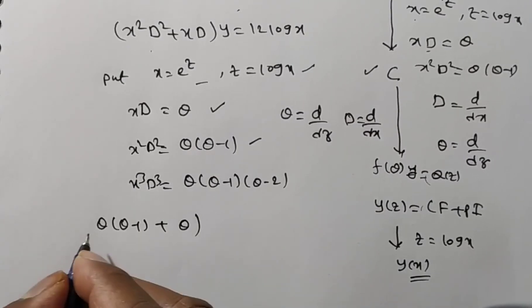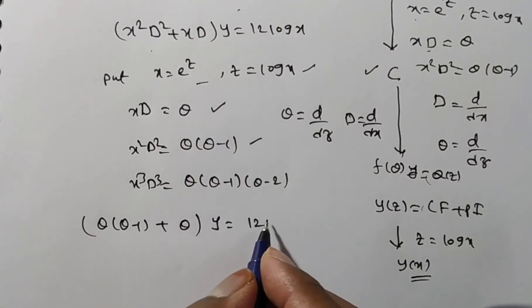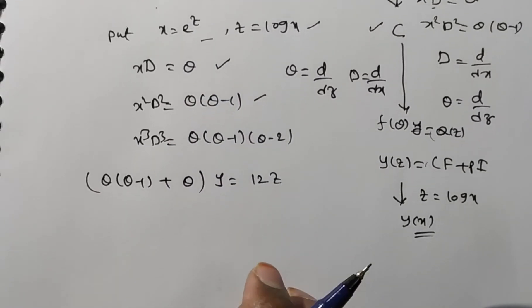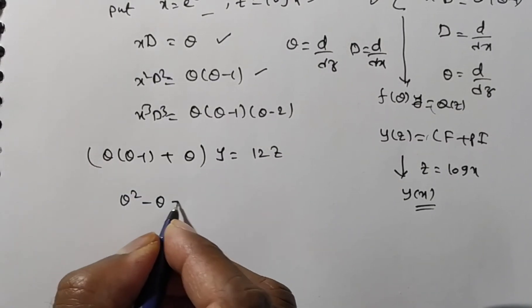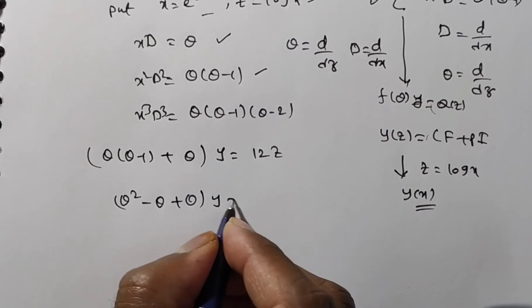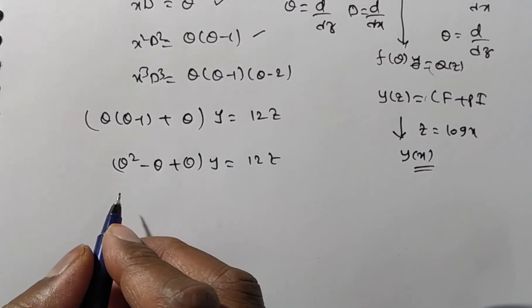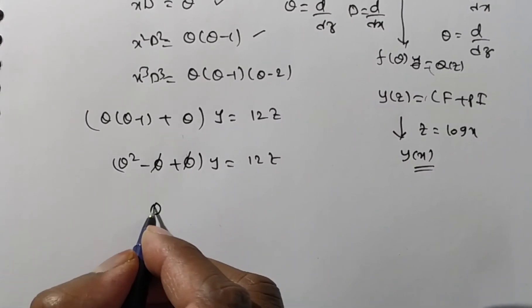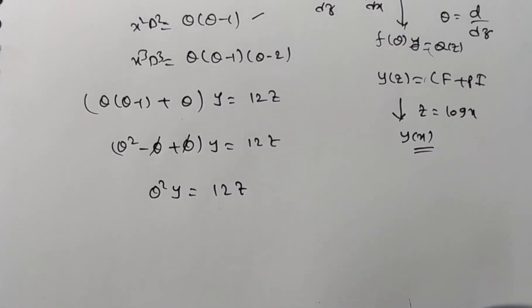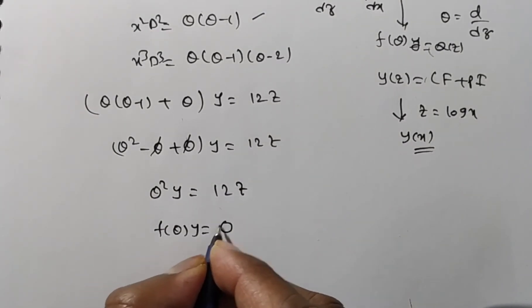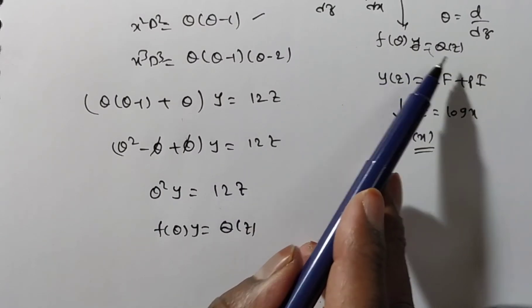Simplifying the left side: θ² − θ + θ gives θ², so −θ and +θ cancel. We are left with θ²y = 12z, which is now in the form f(θ)·y = Q(z) — a constant coefficient differential equation.